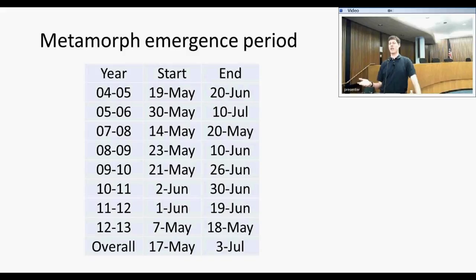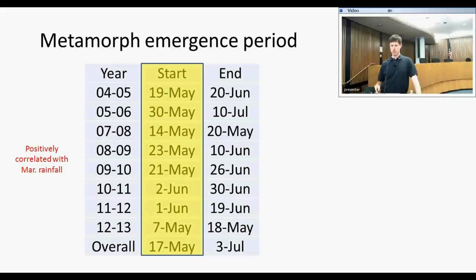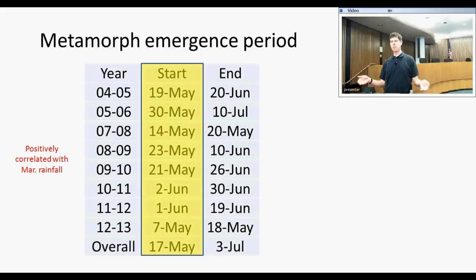For the metamorph emergence period, on average salamanders start emerging in mid-May and are usually done by very early July. The start date is positively correlated with March rainfall — if it rains a lot in March, the pond holds water later into the season, so there's less drive to get out early and salamanders can wait a little longer. The impetus to leave the breeding pond is that if it's close to drying, you have to get out before all the aquatic habitat is gone.